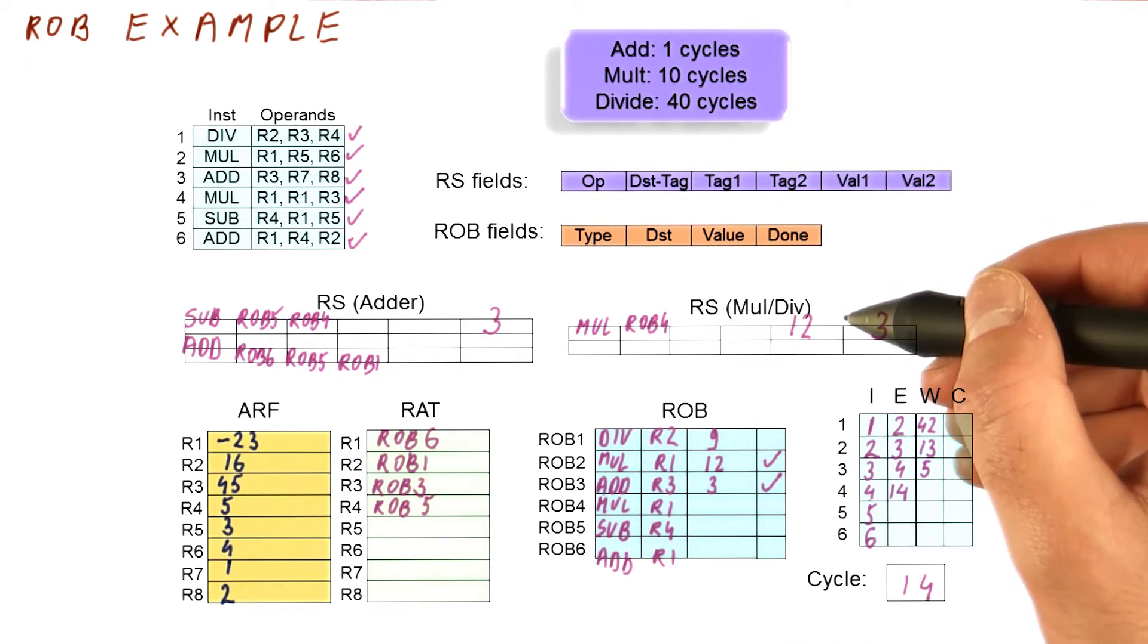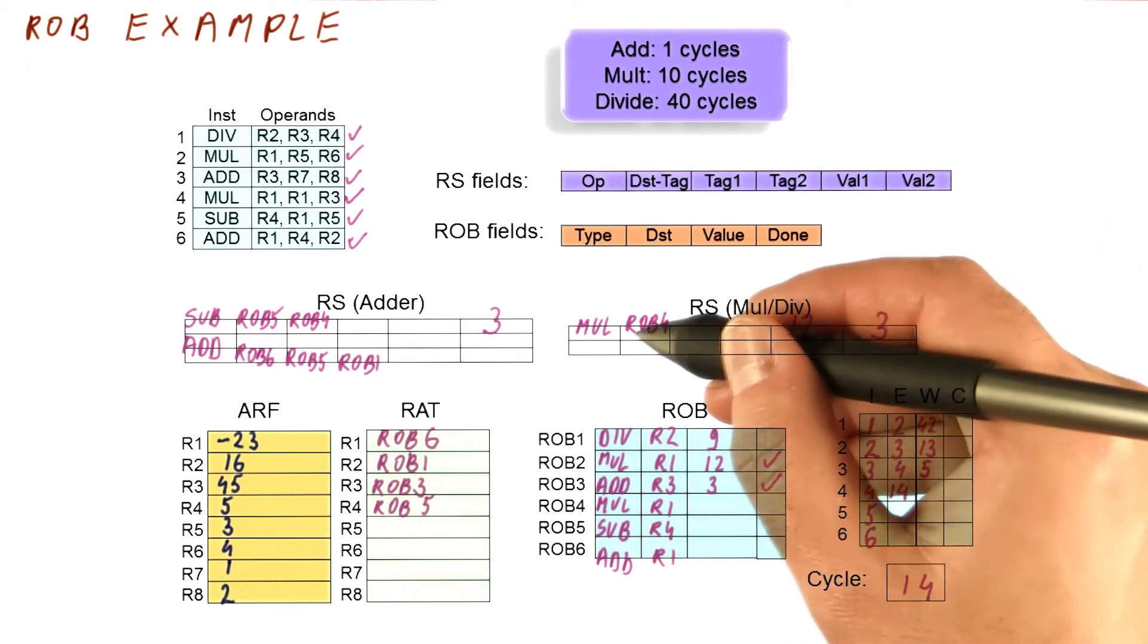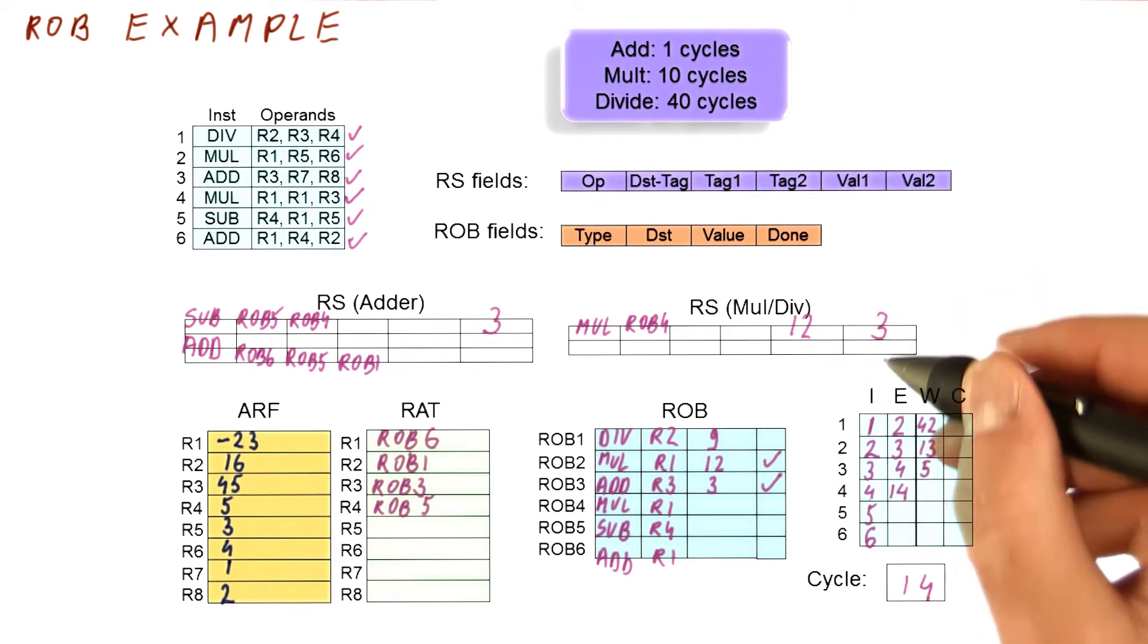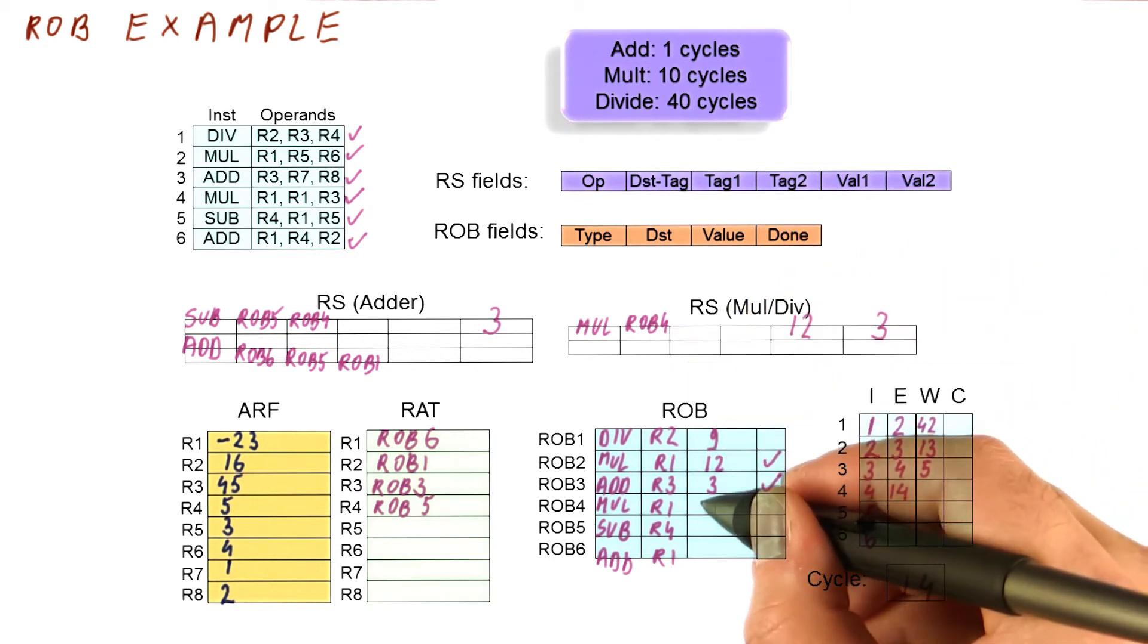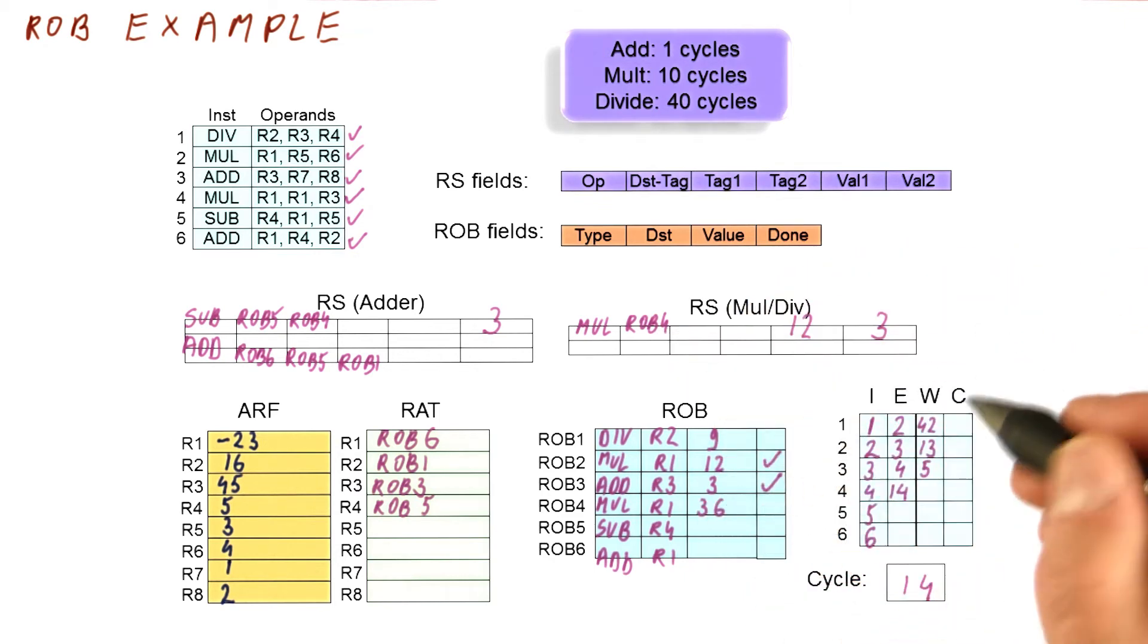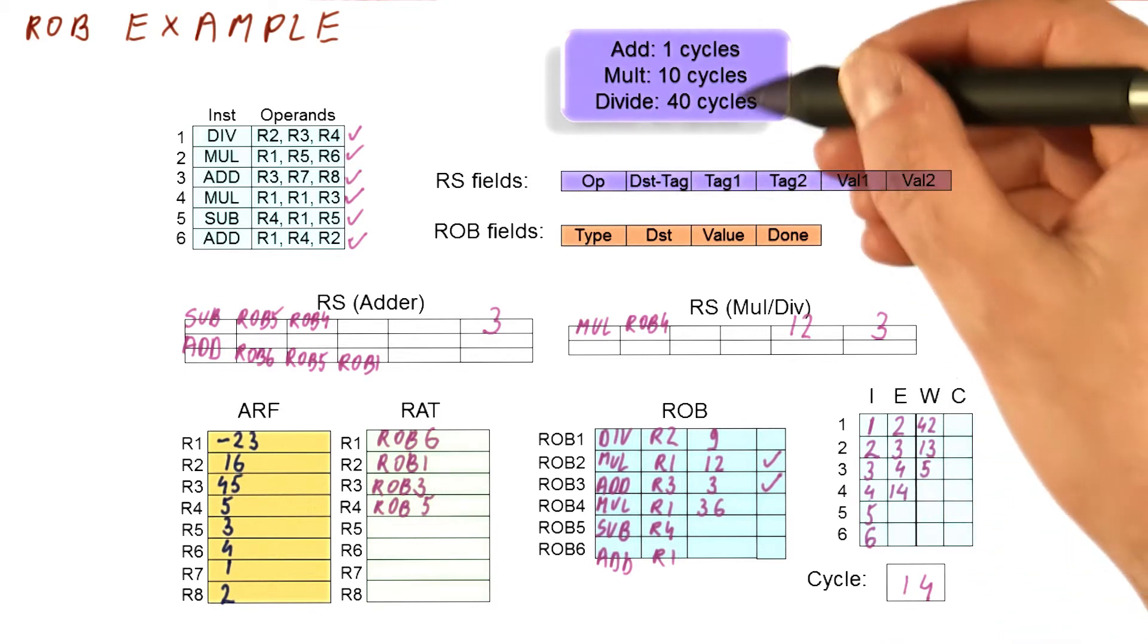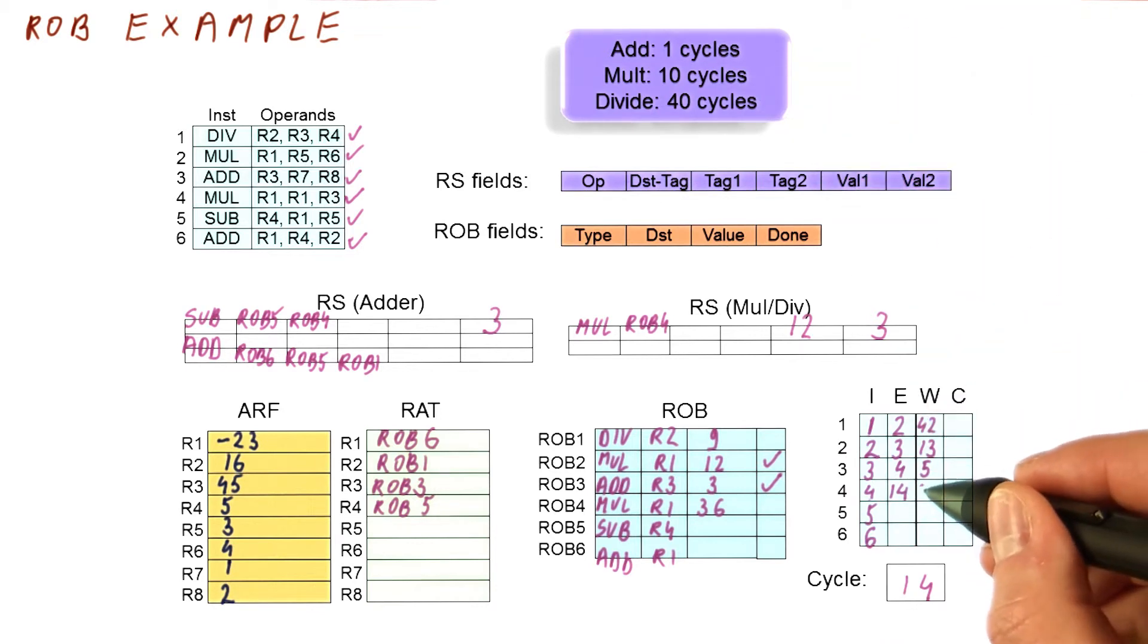So I'm going to note that this multiplication of 12 and 13, which gives us 36, is going to end up in rob4 eventually, here. But it's not going to be done until 10 cycles from cycle 14. So it's going to be in cycle 24 that we try to write the result.